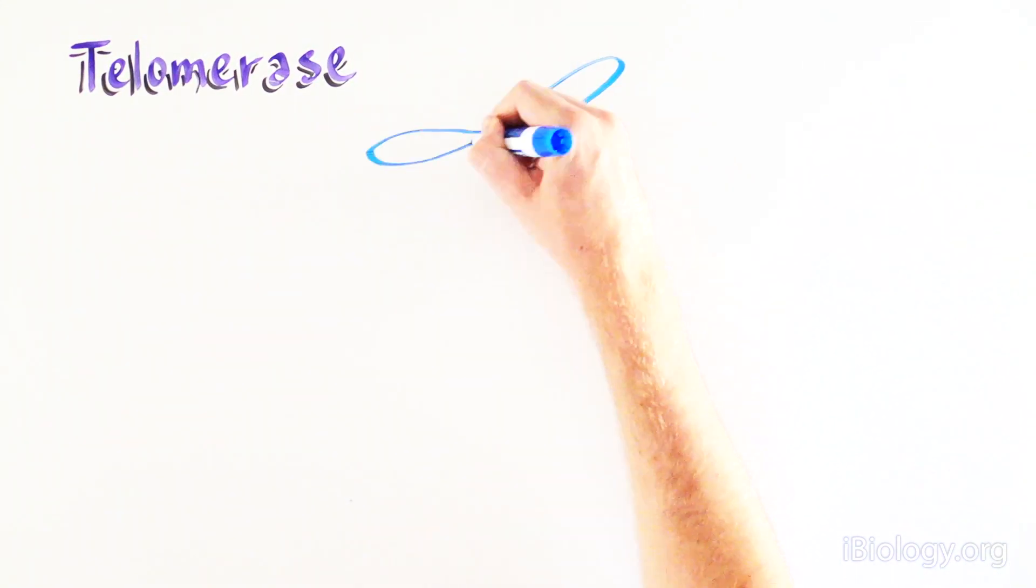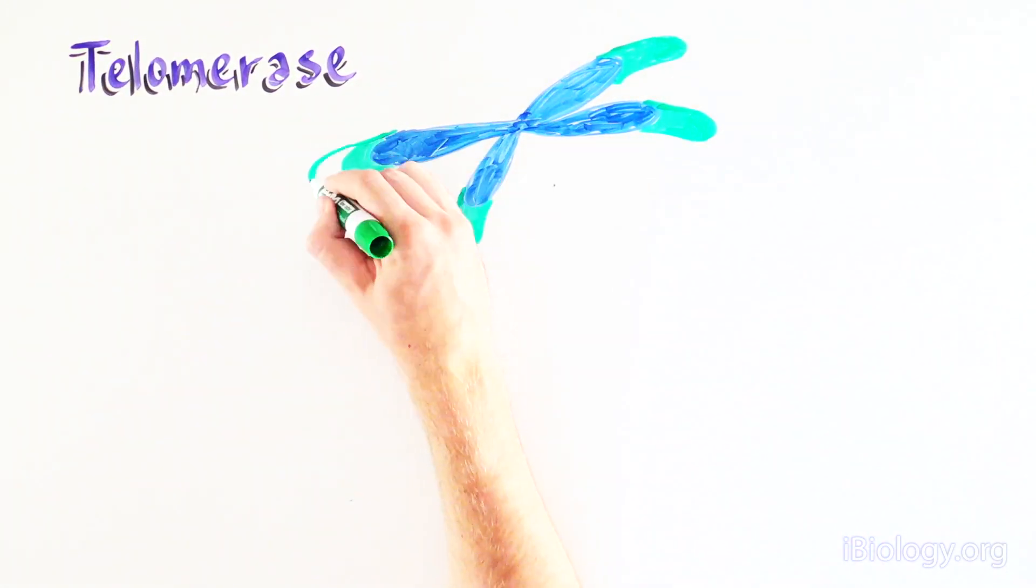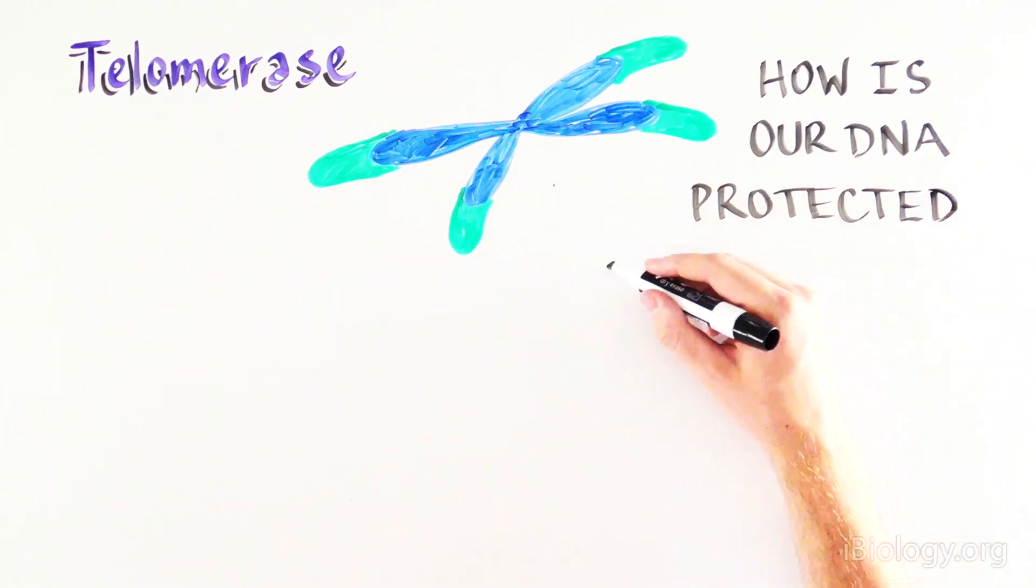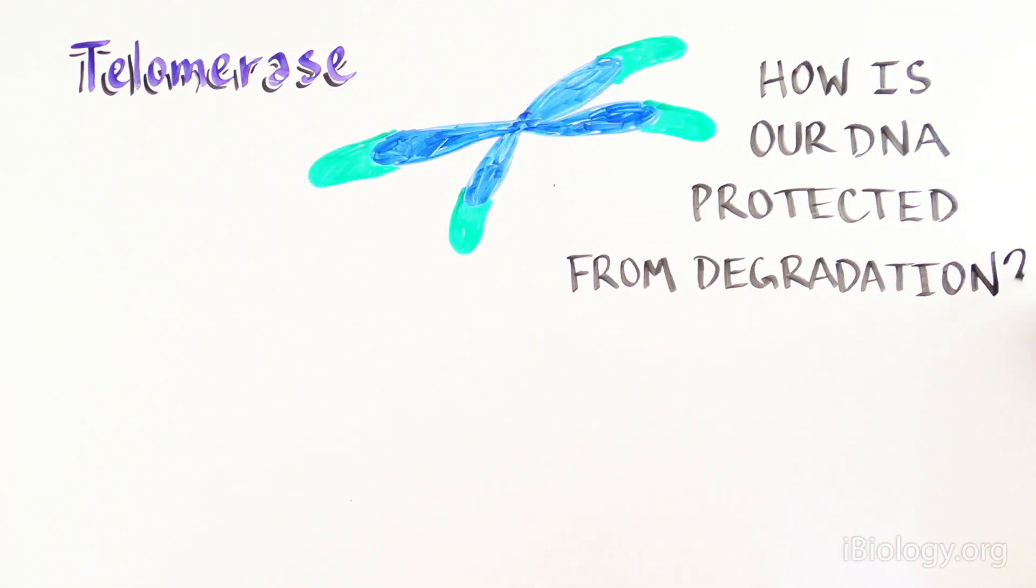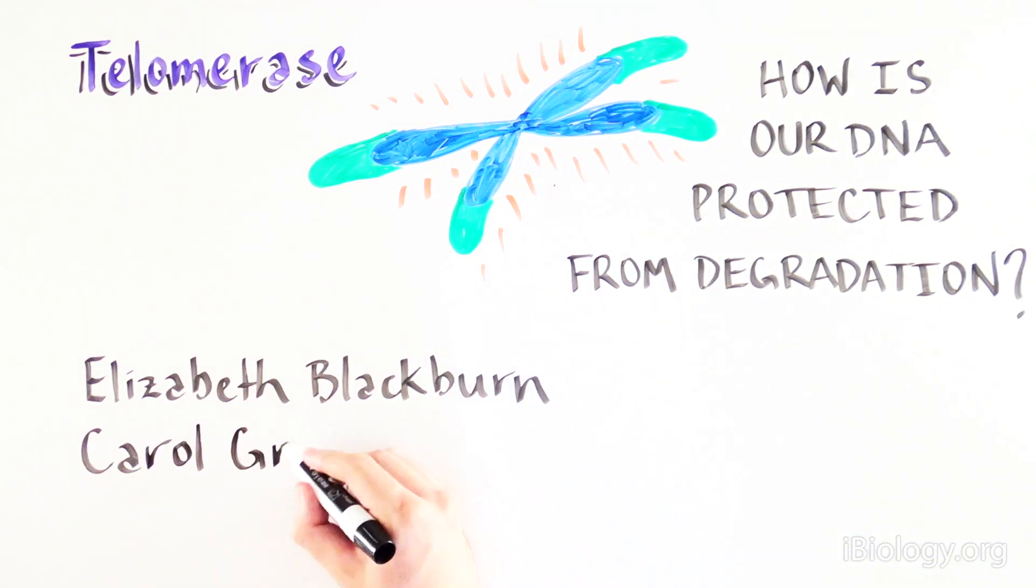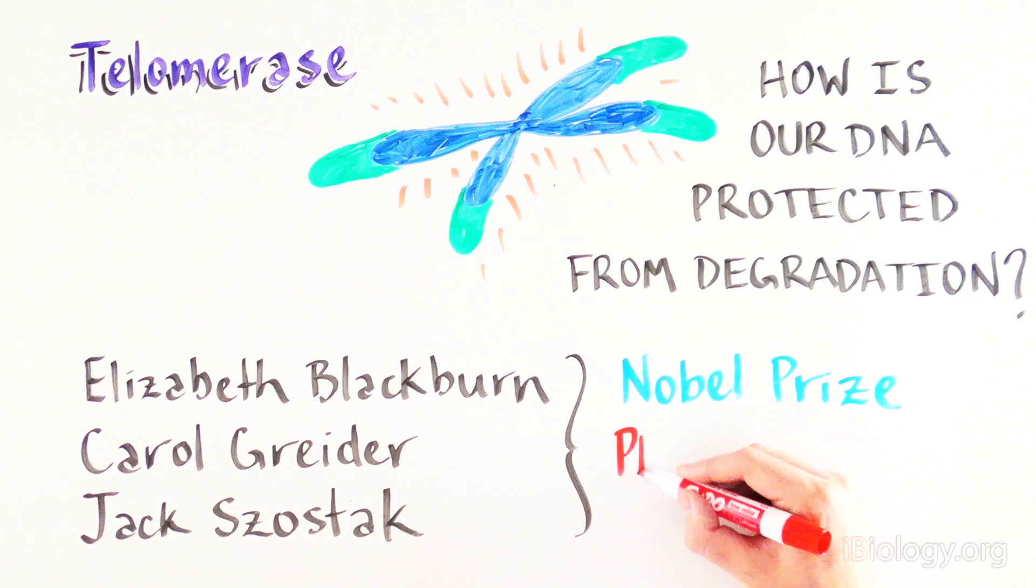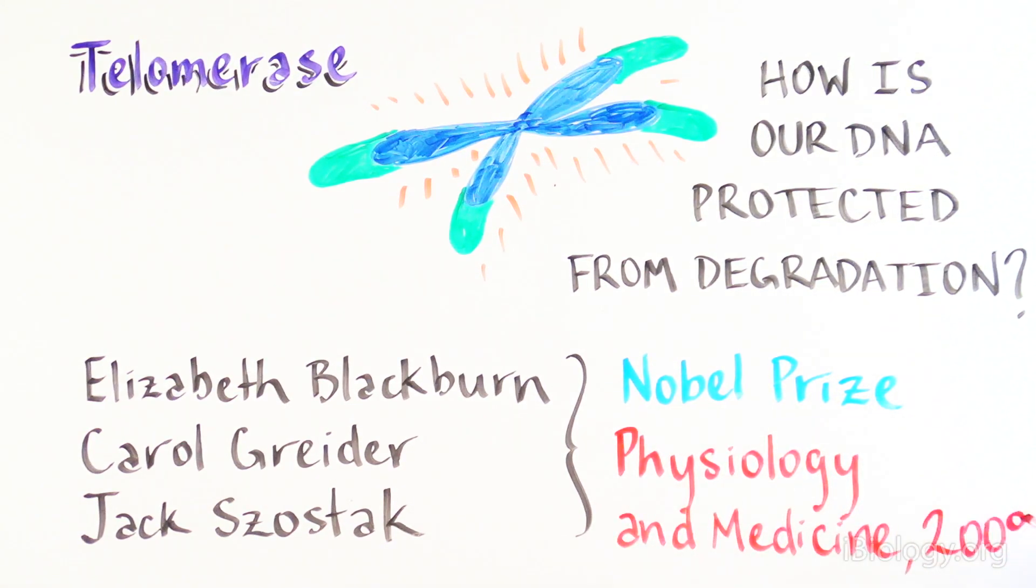By discovering that telomerase is the enzyme that can extend the protective caps at the ends of chromosomes called the telomere, these scientists solved one of the most important puzzles in biology. How is our DNA being protected from degradation after each cell division? This important discovery was the reason these scientists, along with Jack Shostak, won the Nobel Prize in Physiology and Medicine in 2009.